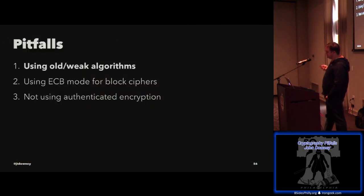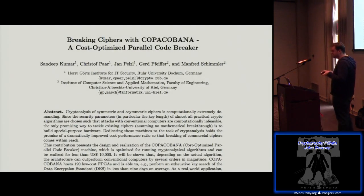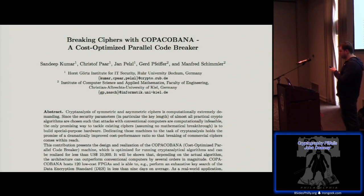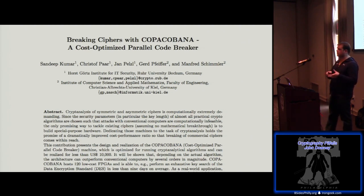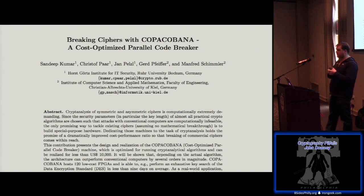Now, ciphers. Old weak algorithms rear their ugly head again. Breaking ciphers with Copacabana was presented at a crypto conference in 2006, where they showed you could build specialized hardware for less than ten thousand dollars that could break DES in basically no appreciable amount of time. People really shouldn't be using DES — even in 2006 it had been replaced by AES and Triple DES.